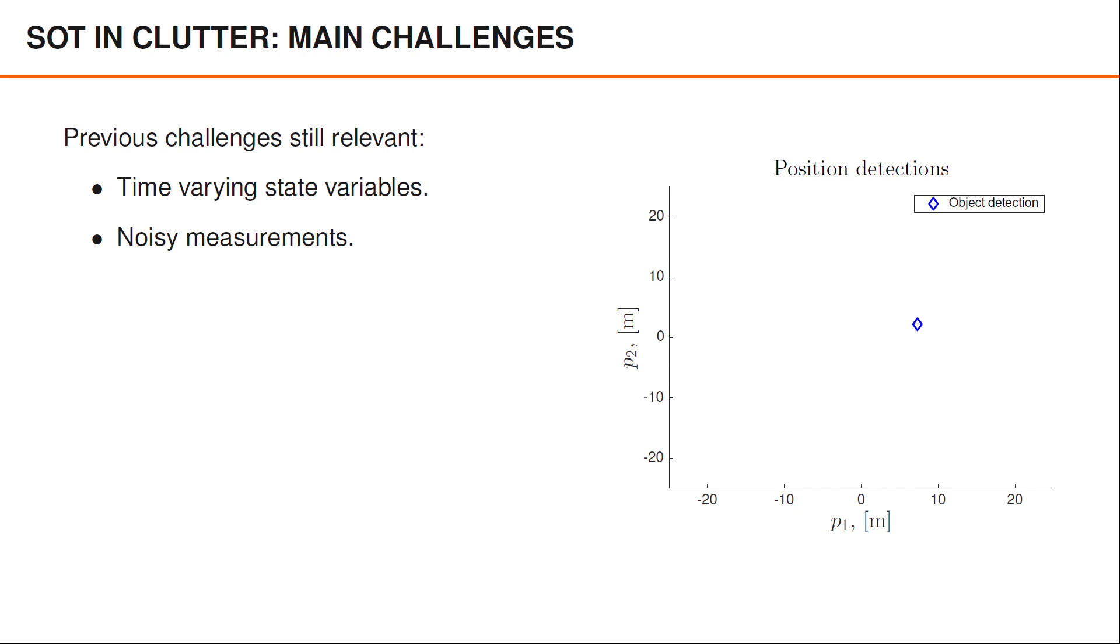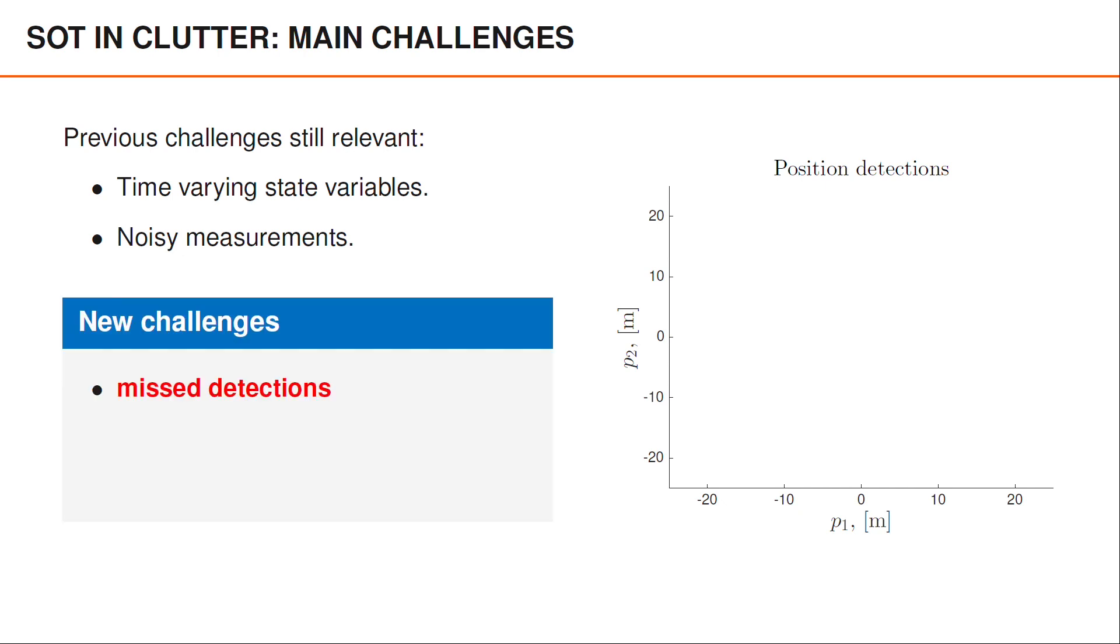Now, single object tracking in clutter also involves three new challenges which are closely related and that are all caused by a more complicated measurement model. First of all, we assume that the object is detected by some sort of external sensor, like a camera or a radar. And these sensors are not perfect. Apart from the noise that we've already mentioned, it is also possible that the sensor will fail to detect the object every now and then. And we refer to these events as missed detections.